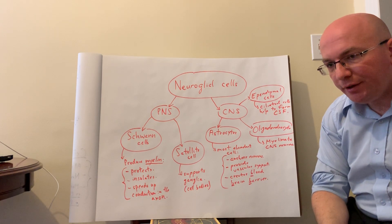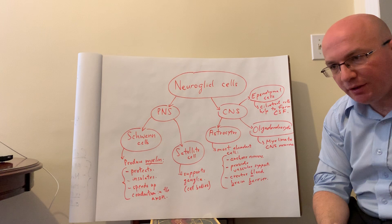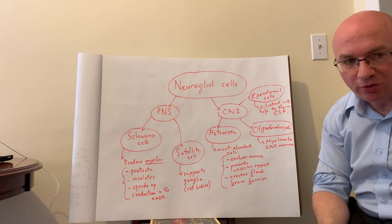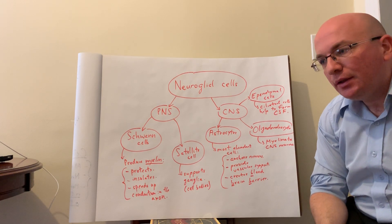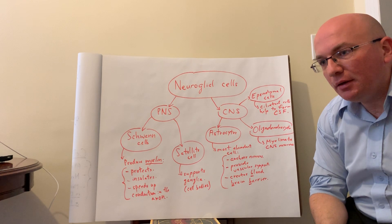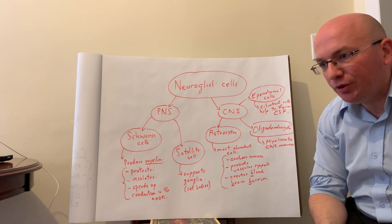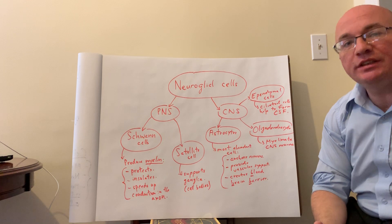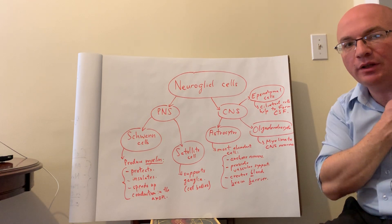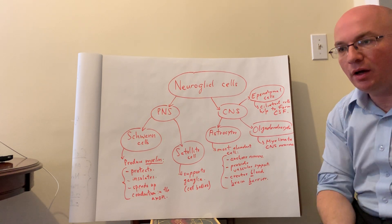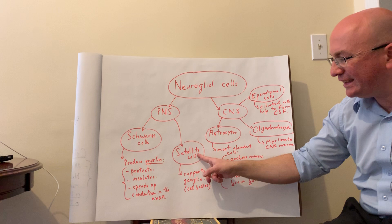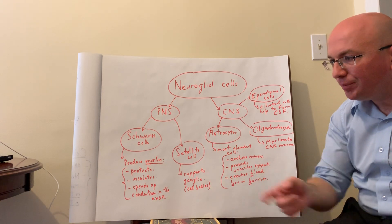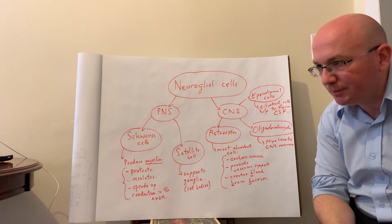In other areas, such as the dorsal root ganglia — those collections of cell bodies aggregating together in the peripheral nervous system — another support cell is needed. These are called satellite cells, and their role is to support the ganglia in the peripheral nervous system.